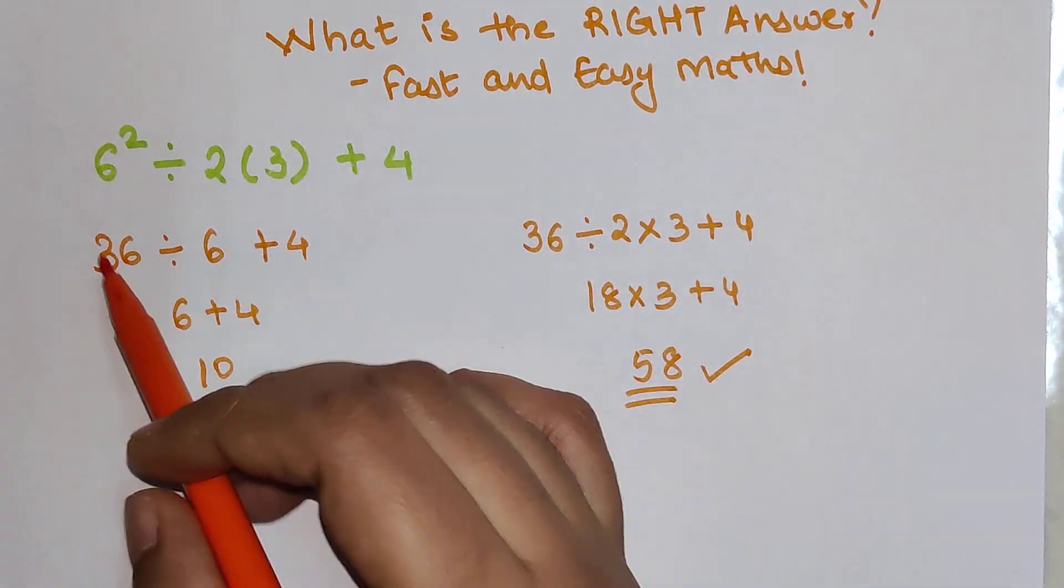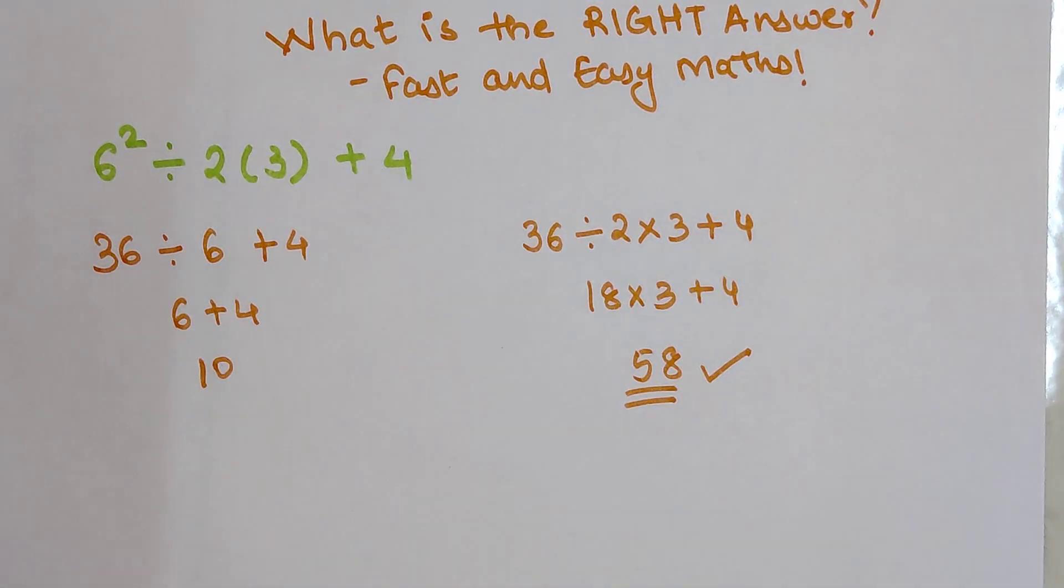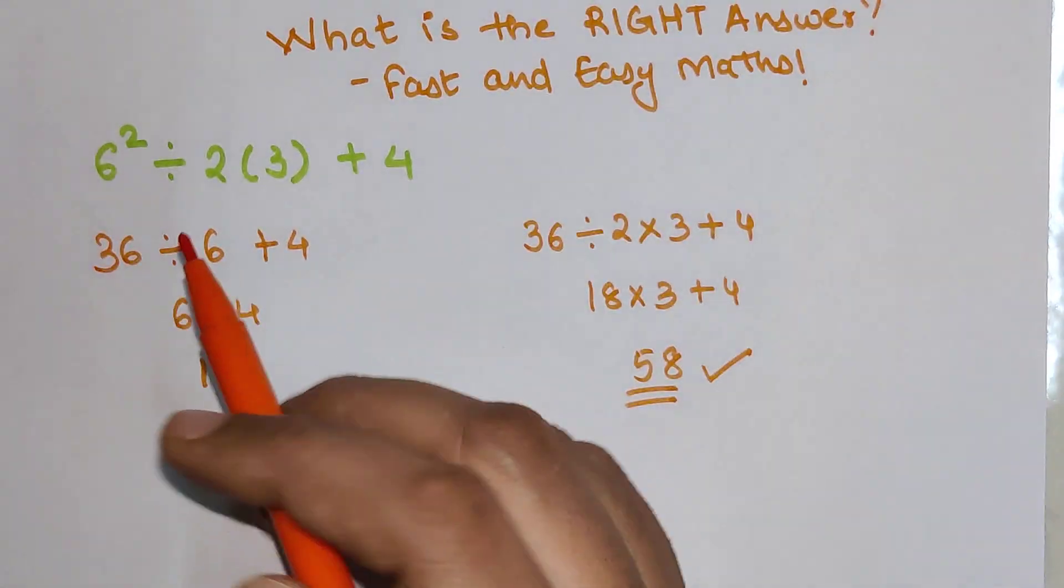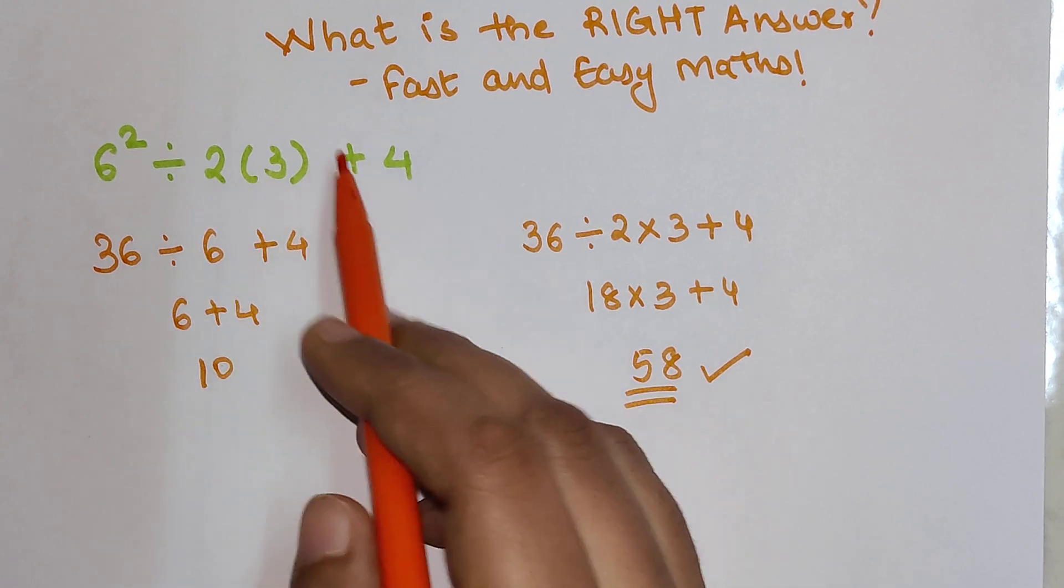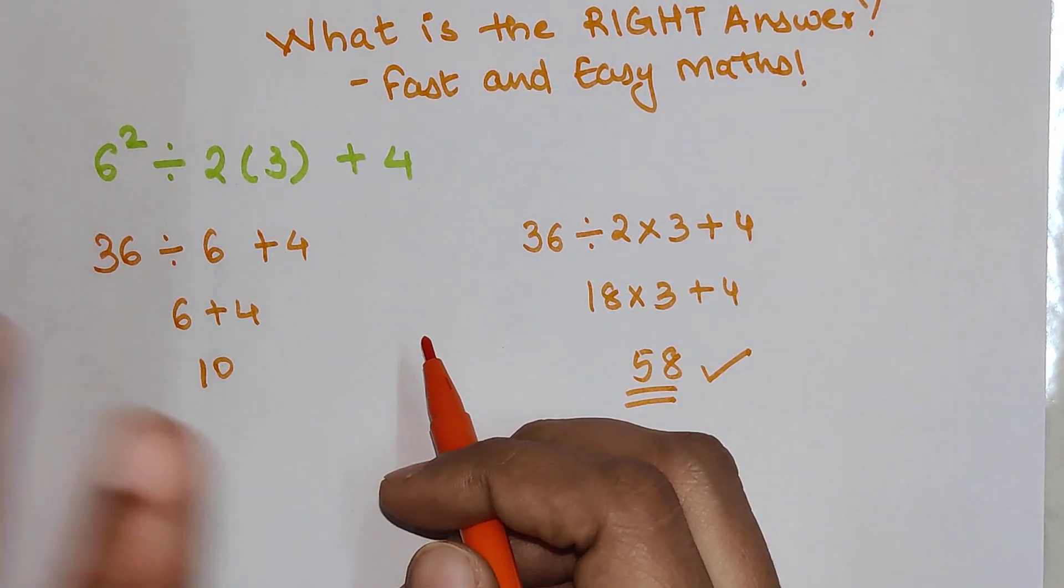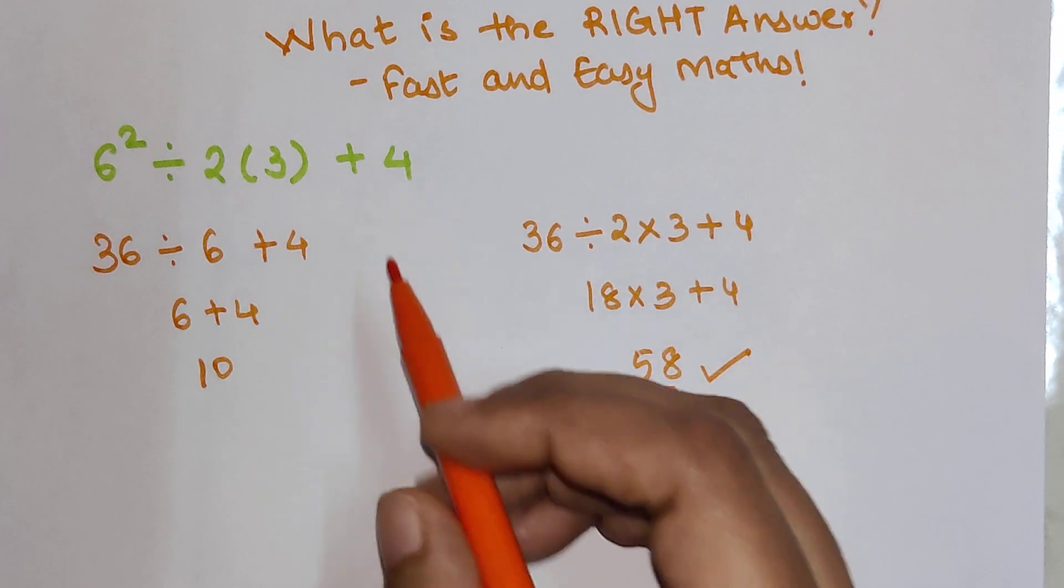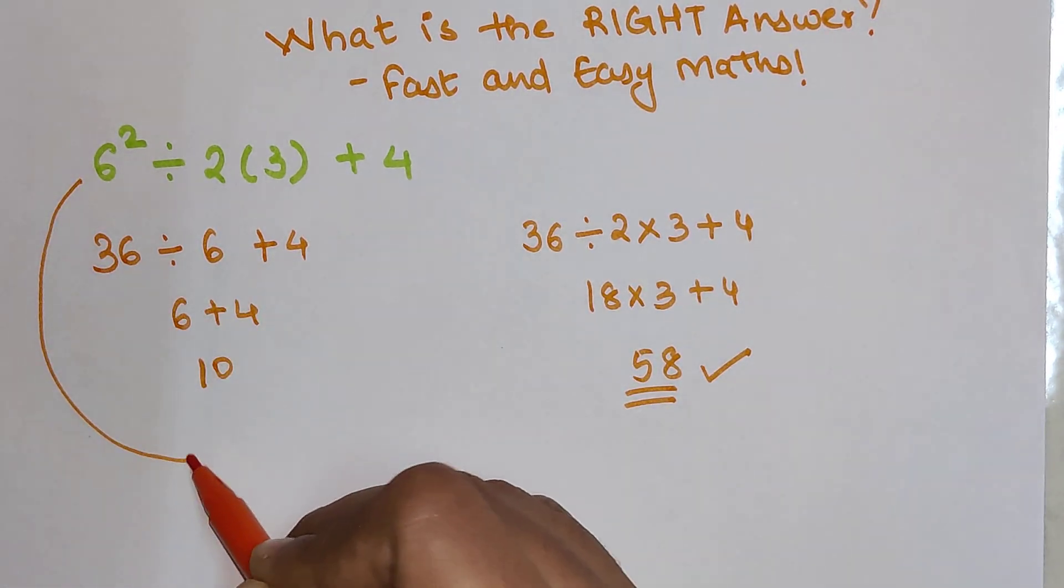So now over here, please understand we are applying the BODMAS rule. And when you have this bracket, it is taken as multiplication.